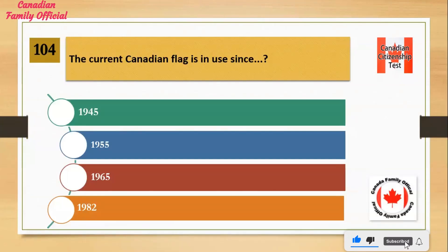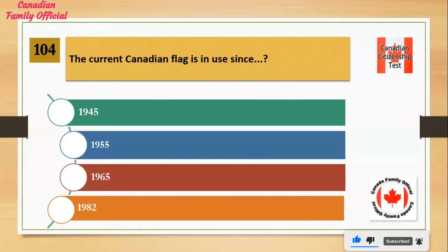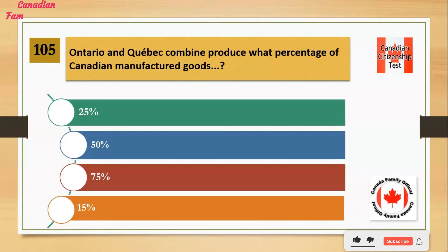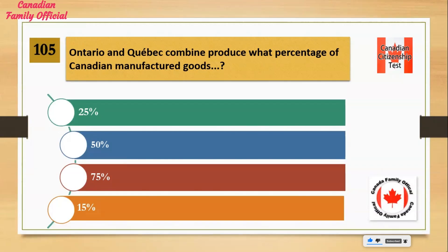The current Canadian flag has been in use since: Number 1: 1945. Number 2: 1955. Number 3: 1965. Number 4: 1982. And the answer is 1965.